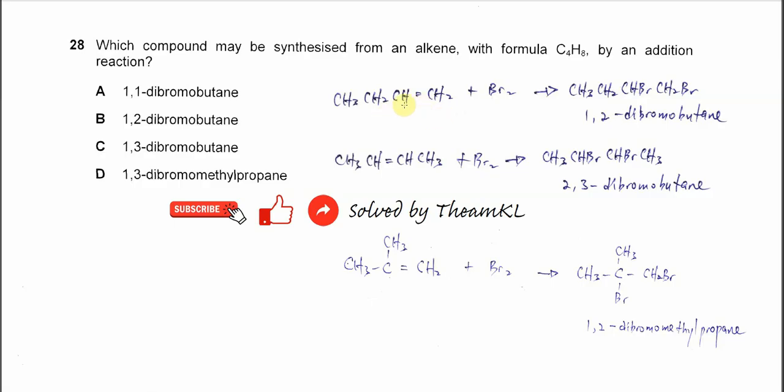If but-1-ene undergoes bromine addition, the bromine will add to the first and second carbon here to form this compound. It will form 1,2-dibromobutane, which is answer B. So obviously the answer is B.